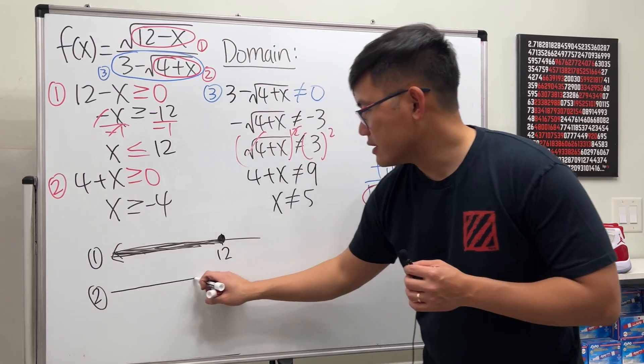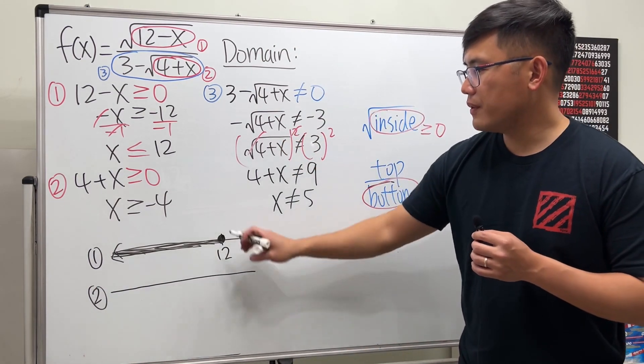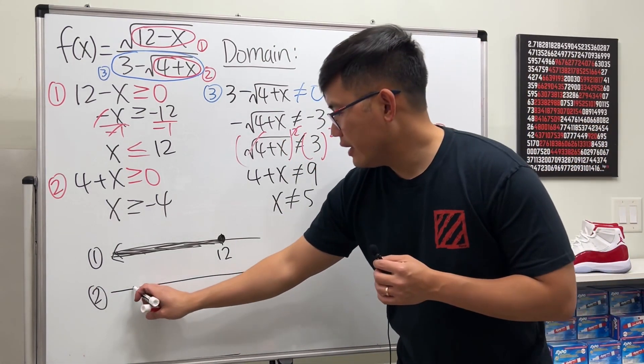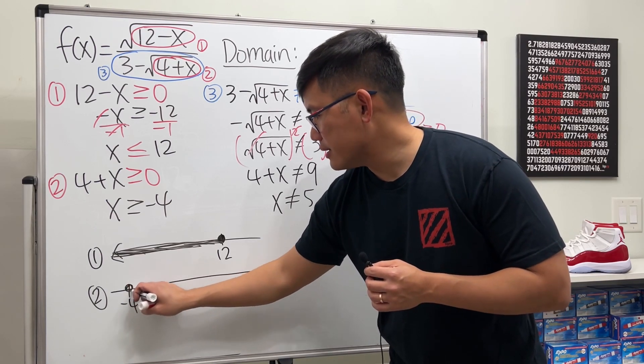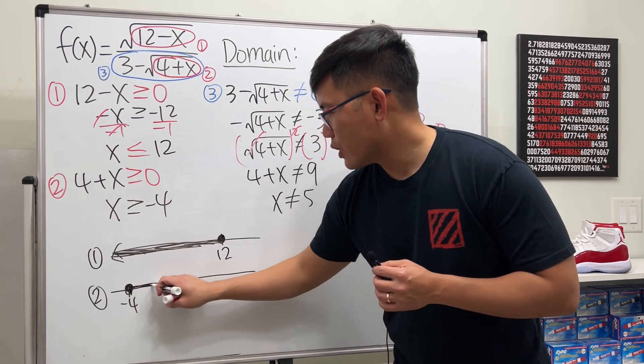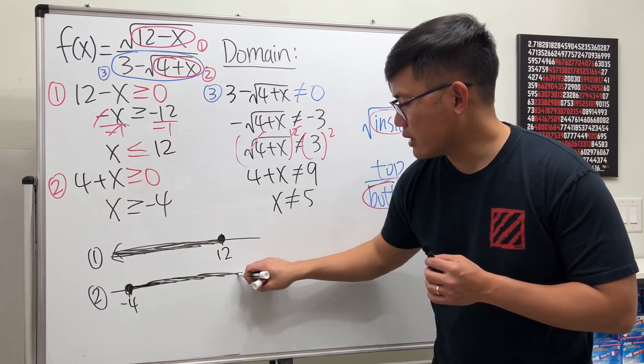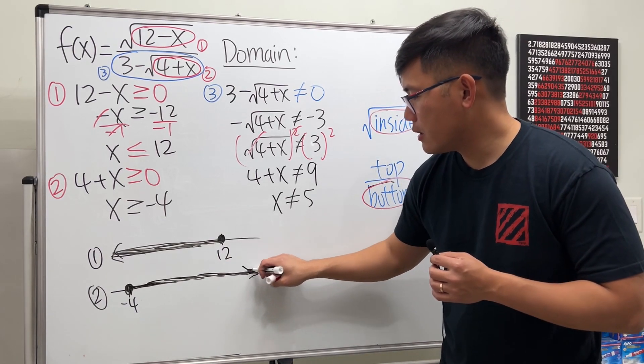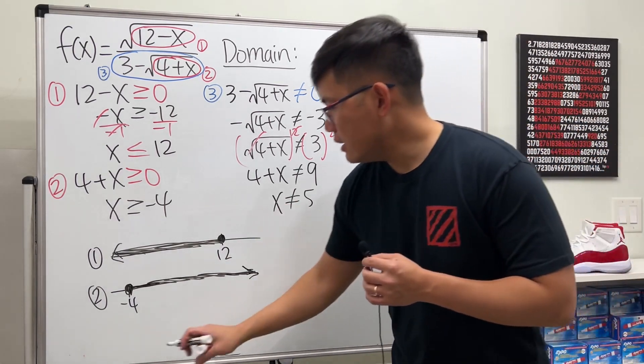Next, we have x is greater than negative 4. So let's say negative 4 is somewhere here, and again it's inclusive, and then here we go to the right like this.